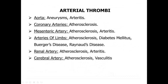Arterial thrombi are seen in the aorta due to aneurysm or arteritis; coronary arteries due to atherosclerosis; mesenteric artery due to atherosclerosis and arteritis; arteries of the limbs due to atherosclerosis, diabetes mellitus, Buerger's disease, or Raynaud's phenomenon; renal artery due to atherosclerosis or arteritis; and cerebral artery due to atherosclerosis and vasculitis.